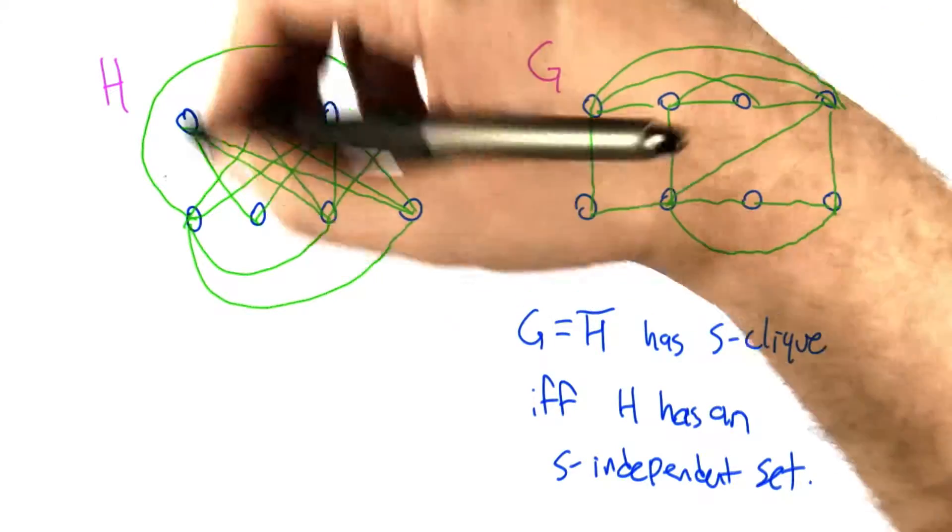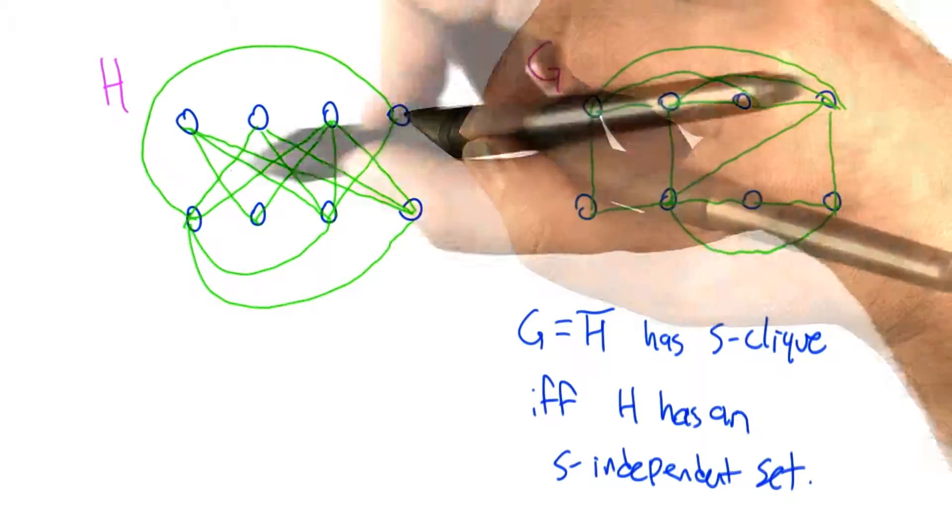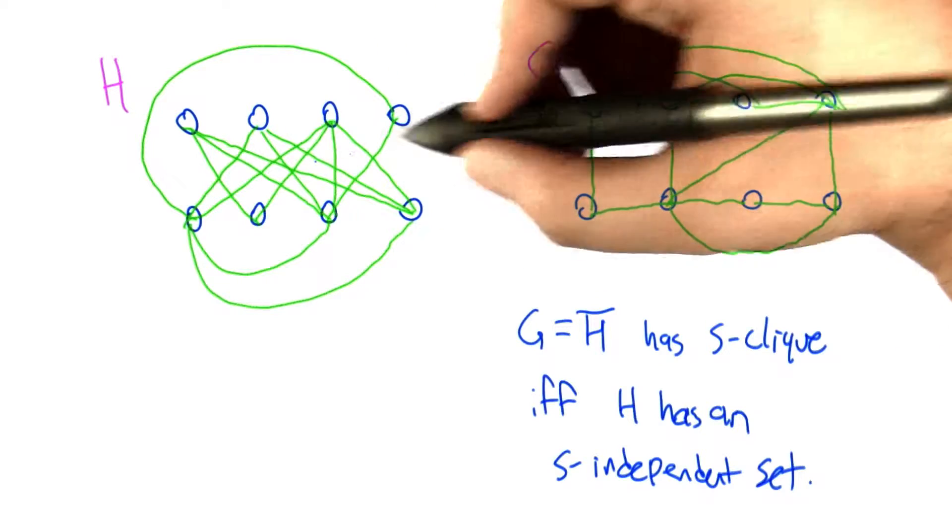Just to illustrate this example, imagine we start off with some graph H. It's a little bit of a mess. There's lots of edges in here.